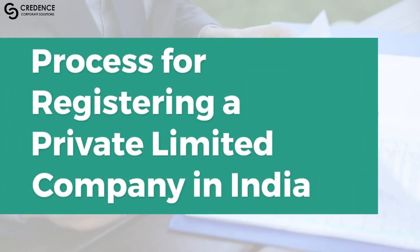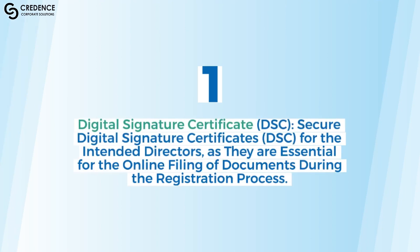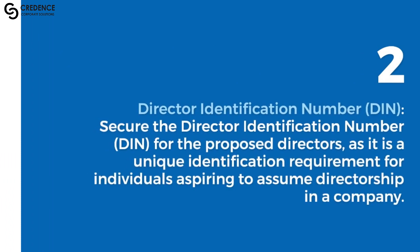This is the process for registering a private limited company in India. Step 1: Secure a Digital Signature Certificate (DSC) for the intended directors, as it is essential for the online filing of documents during the registration process. Step 2: Secure the Director Identification Number (DIN) for the proposed directors, as it is a unique identification requirement for individuals aspiring to assume directorship in a company.